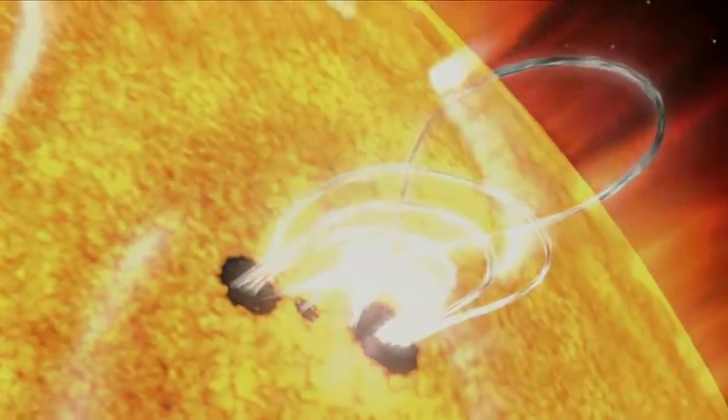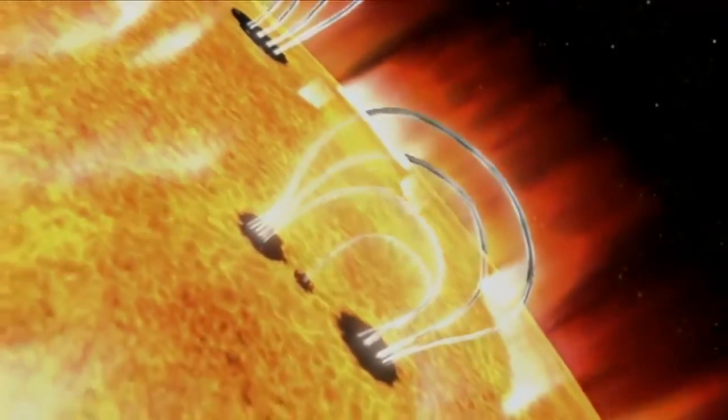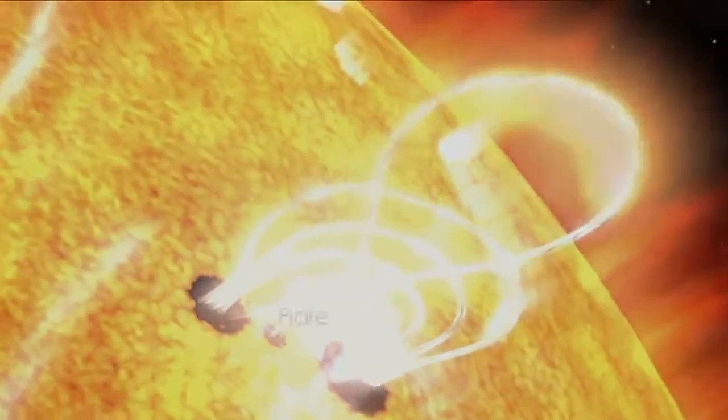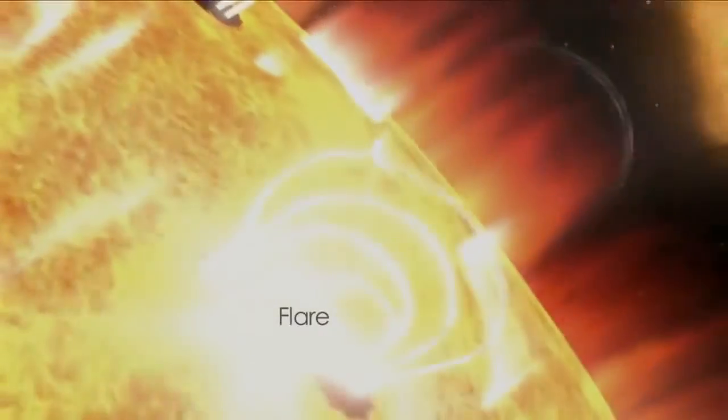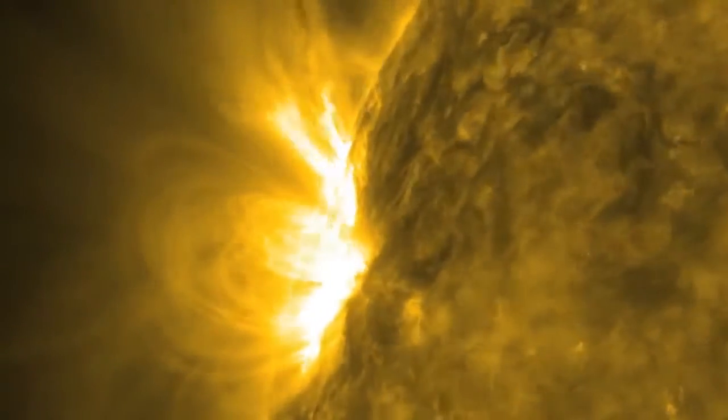A CME is that material and that magnetic field line just getting thrown away from the Sun due to this interaction, whereas a flare is the close to the surface phenomena where the twisting and the snapping occurs and therefore you get all this heat and kinetic energy.